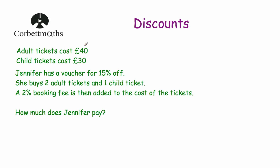Our last question says adult tickets cost £40 and child tickets cost £30. Jennifer has a voucher for 15% off. She buys two adult tickets and one child ticket, and a 2% booking fee is then added to the cost of the tickets. How much does Jennifer have to pay? We'll find the total cost of the tickets first, then take off the 15%. Two adult tickets are £40 + £40, and one child ticket is £30. The total is 40 + 40 + 30 = £110, so the tickets normally cost £110.